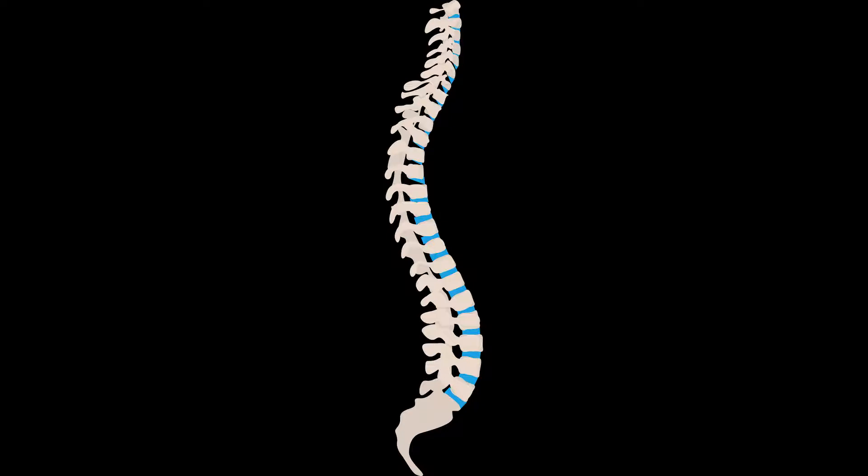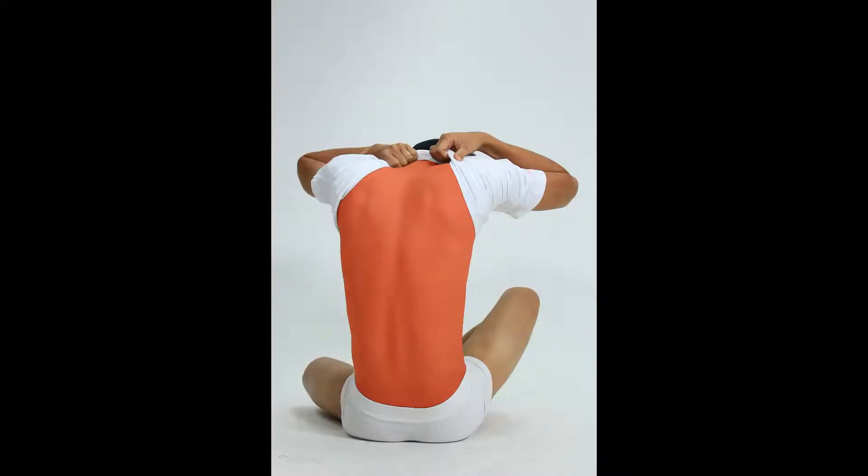Various structural problems may also result in back pain. Number one: ruptured disc — each vertebra in the spine is cushioned by discs; if the disc bursts, there will be more pressure on a nerve, resulting in back pain. Number two: bulging disc — similarly, a bulging disc can result in more pressure on a nerve.